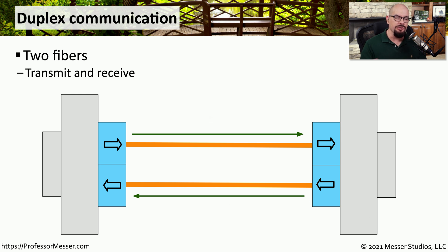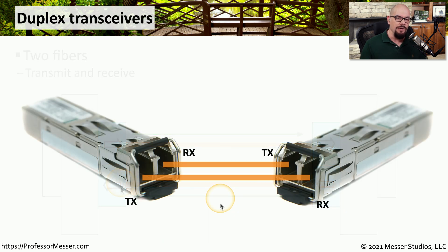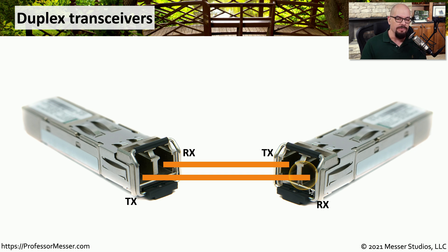With most of these transceivers, you'll commonly see two separate fibers being used for the connection. One of these fibers would be the transmit fiber and the other fiber is used exclusively to receive any information. If you're connecting two transceivers, then you would have one fiber using the receive side of one transceiver and plugging into the transmit side of the other. Conversely, on that side, the receive side of that transceiver would plug into the transmit side on the reverse transceiver.